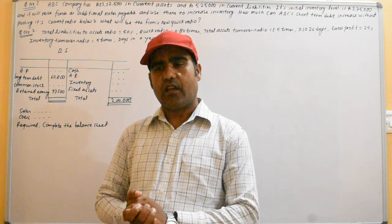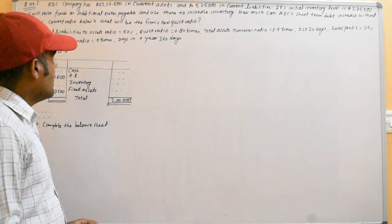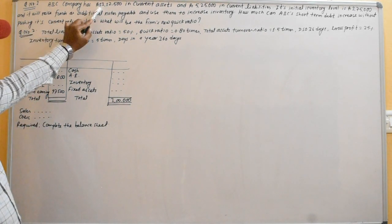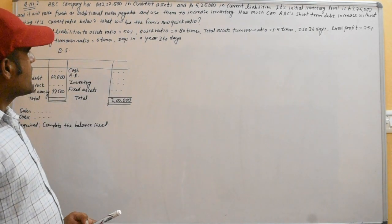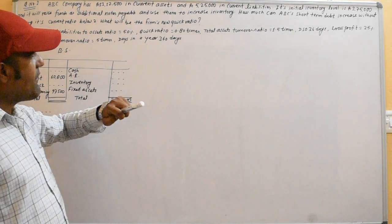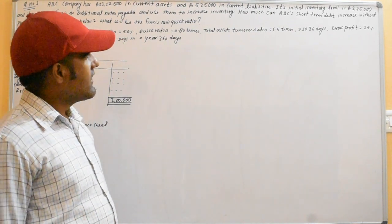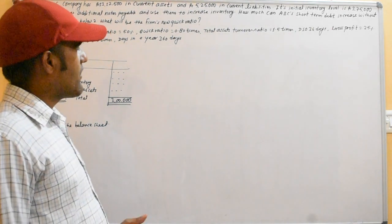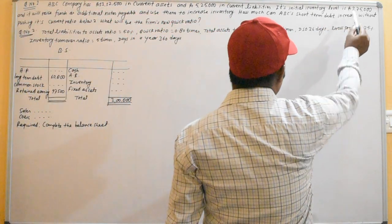The first question: ABC company has 13,12,500 in current assets and 5,25,000 in current liabilities. Its initial inventory level is 3,75,000.